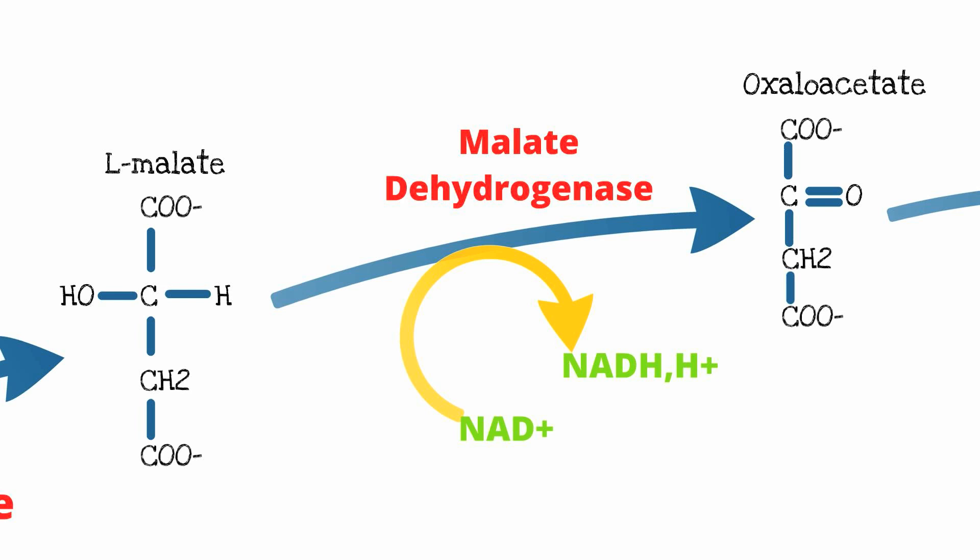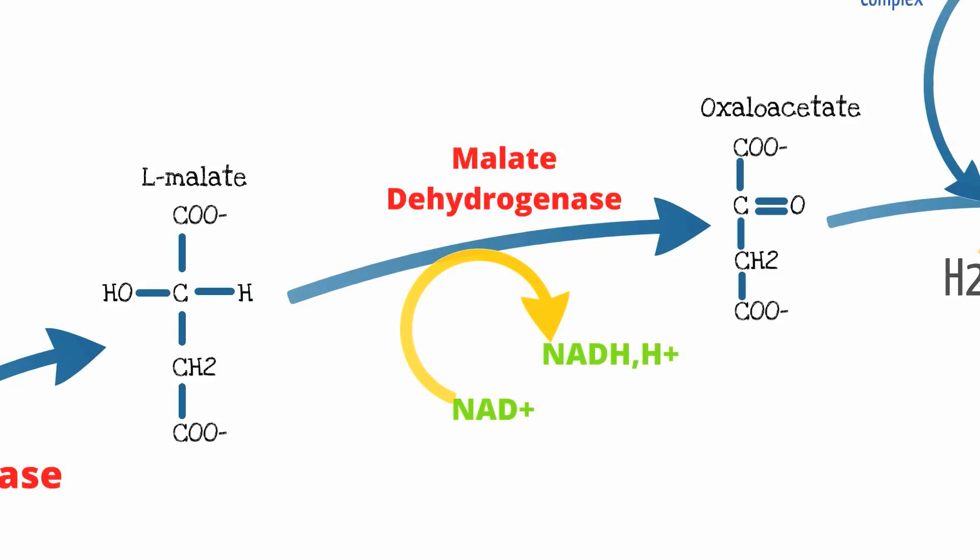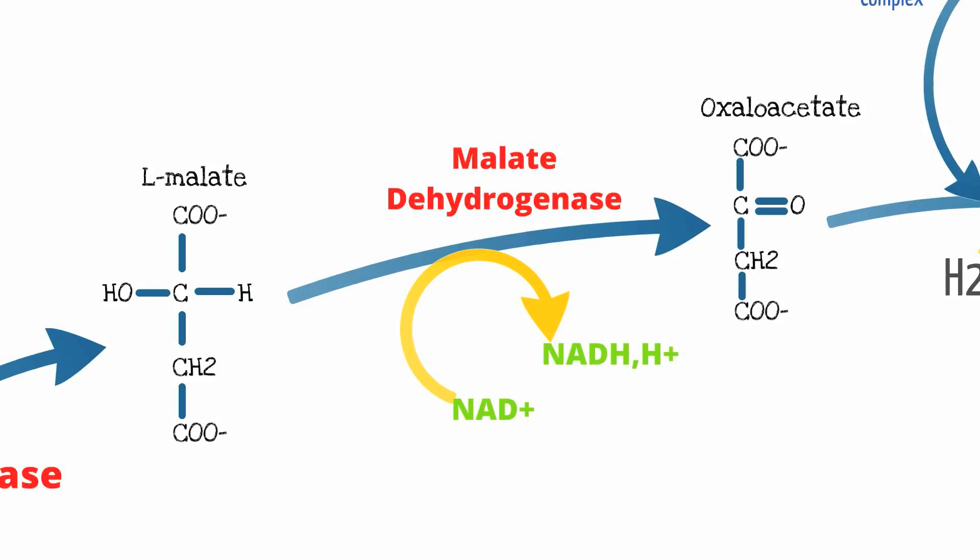Overall in this cycle, there is no net production of any of the intermediates discussed, but we do create three NADH, one FADH2, and one GTP from each acetyl-CoA that enters the Krebs Cycle. The carbons that enter via acetyl-CoA leave as carbon dioxide and CoA. The cycle has only produced one GTP, so it's really a setup for the electron transport chain — all the NADH and FADH2 produced here will generate a significant amount of ATP there.